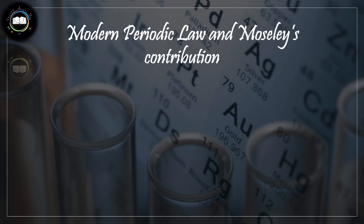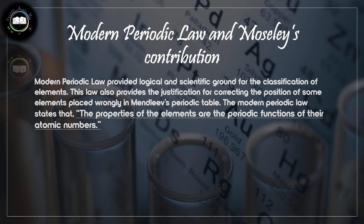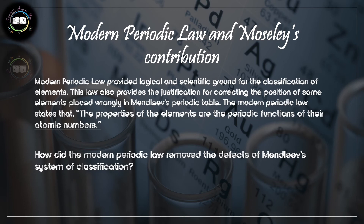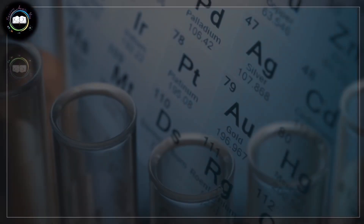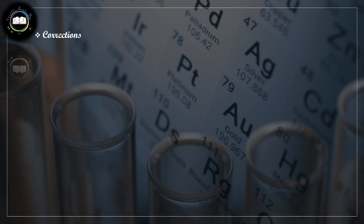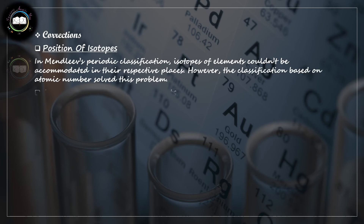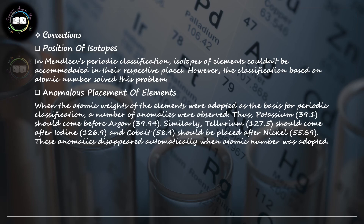In 1913, Moseley, a British physicist, established that atomic number is the fundamental property of the elements. On this basis he stated that the properties of the elements are a periodic function of their atomic numbers. This modern periodic law removed the defects of Mendeleev's system — the main weakness had been reliance on atomic weights, which was corrected by using atomic numbers. As a result, isotopes got proper placement, anomalous placements disappeared automatically, and rare earth elements — lanthanides and actinides — also got their place in the periodic table.